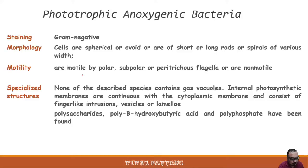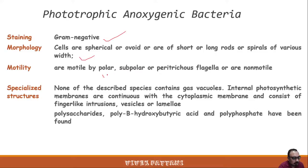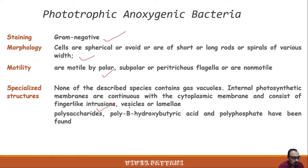There are two types: oxygenic and anoxygenic phototrophic bacteria. Their basic characters: mostly gram-negative, cells spherical, long rods, or spiral. If motile, they use bipolar, subpolar, or peritrichous flagella, or are non-motile. None of the described species contains gas vacuoles, and internal photosynthetic membranes are continuous with the cytoplasmic membrane, consisting of finger-like intrusions such as vesicles or lamellae.